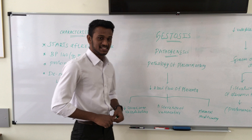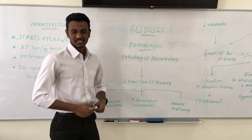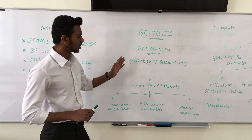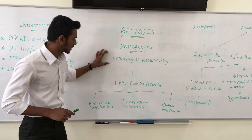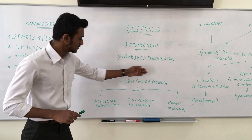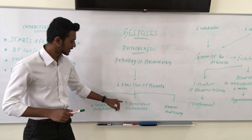Now let me explain the pathogenesis. The cause of gestosis is still unknown and not yet specified. This unknown cause leads to pathology of the placental artery, and this placental artery pathology decreases blood flow to the placenta, giving three results: decreased secretion of vasodilators, increased secretion of vasoconstrictors, and placental insufficiency.